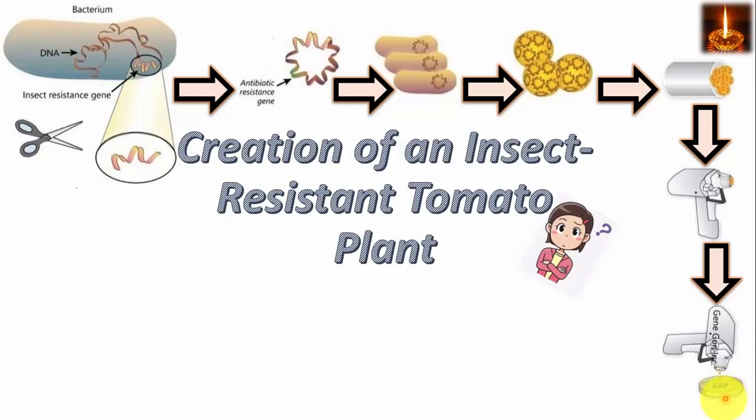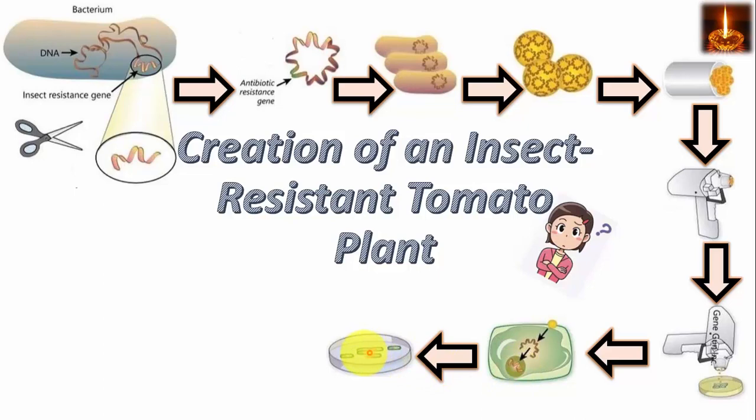it releases the particles at high velocity that penetrate into the plant cells. Next, the vector enters the cells and the genes incorporate into the plant genome.